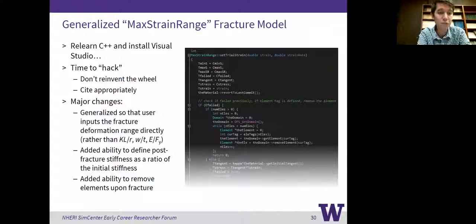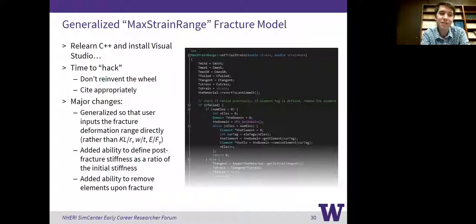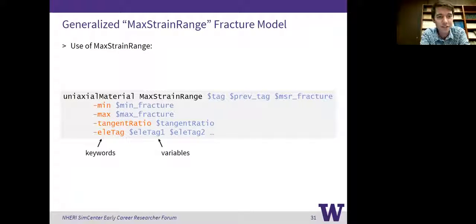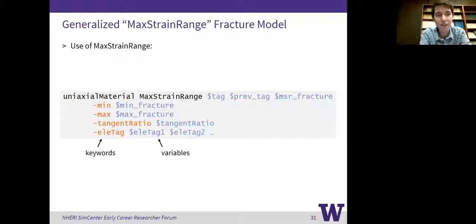I also added the ability to remove elements upon fracture. This took the most time to code, but when the maximum strain range fracture is triggered, instead of just removing the material, we can remove different elements. The use of the maximum strain range material allows you to input the tag of the material, the tag of the previous material you're wrapping, the maximum strain range limit at fracture, options for minimum and maximum strains or deformations, the tangent ratio, and the different elements you want removed once fracture actually occurs.